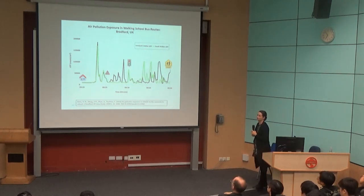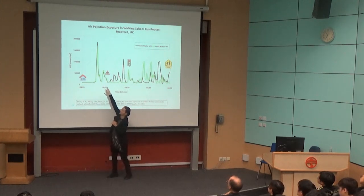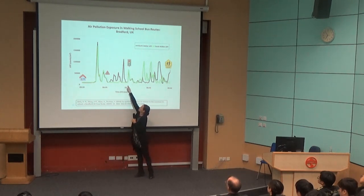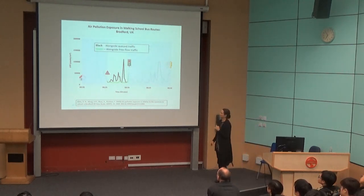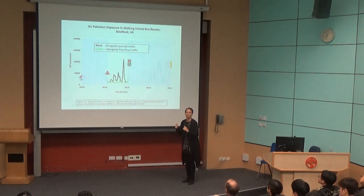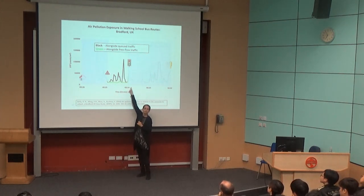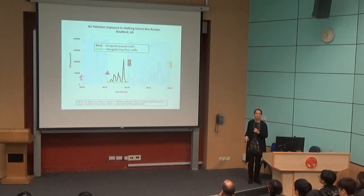A similar study in Bradford, UK had two people leaving home together at 8:20, walking side by side — their monitors matched nicely. Then one crossed to the other side of the road. The most interesting segment was where one walker was alongside traffic stalled and queued at traffic lights — all those cars idling one behind the other. The person on the opposite side of the road, just five or six meters away, missed all those spikes in pollution. Even just choosing to walk on the side away from queued traffic can make a huge difference in exposure.